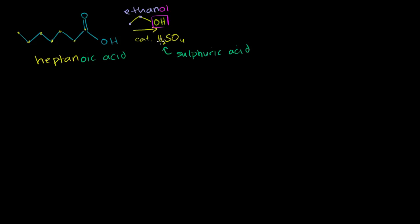I'll actually draw the structure of sulfuric acid because the structure shows you why it's so acidic. Sulfur has six valence electrons, just like oxygen. So it has a double bond to an oxygen, another double bond to an oxygen, and then single bonds to two OH groups — giving it six valence electrons. The reason why this is such a strong acid is that if either of these oxygens take the electron from this proton and give away the proton to the solution, there's a ton of resonance structures here.